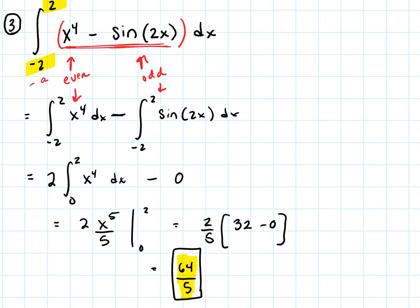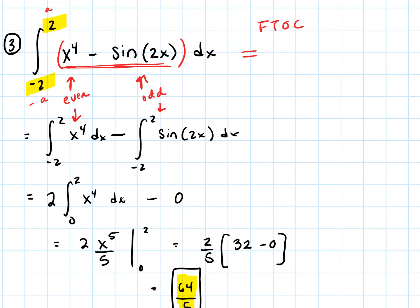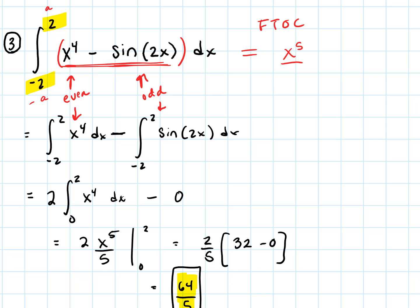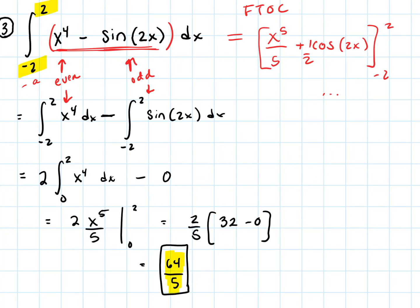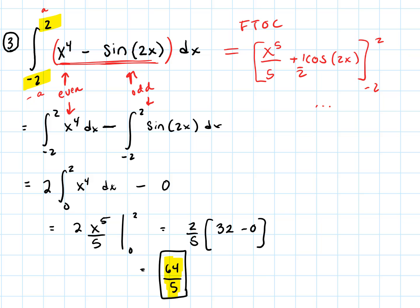We could have just applied the fundamental theorem of calculus — we would have ended up with x to the fifth over 5 plus cosine of 2x times one half, evaluated from negative 2 to 2. We would get to the same answer, but applying these symmetric rules for symmetry across intervals from negative a to a gets us there a little bit faster. It's a nice tool to add to our integration toolbox.